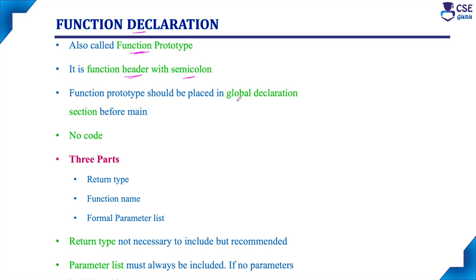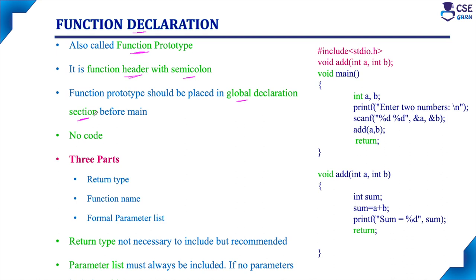Function prototype should be placed in the global declaration section before main. For example, if you are considering a program to add two numbers, this is nothing but the function declaration or function prototype — the same function header with a semicolon.